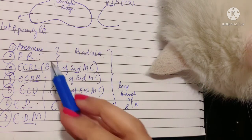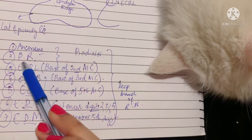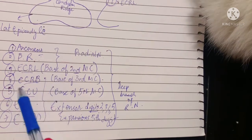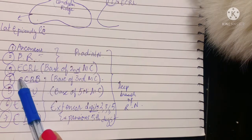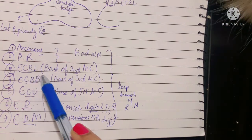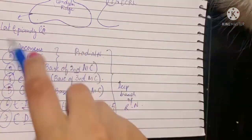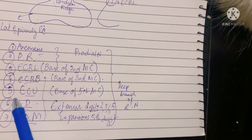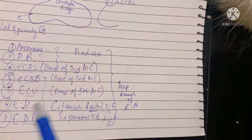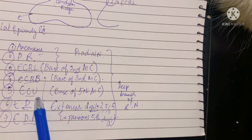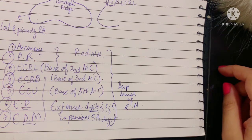Now let's talk about the actions. The anconeus is involved in extending the elbow joint. The brachioradialis is a weak flexor of the elbow joint. The extensor carpi radialis longus and brevis both extend the wrist joint along with abduction, because they attach on the radial side of the hand, causing the hand to move away from the body. The extensor carpi ulnaris causes extension and adduction, moving the hand toward the ulnar border. The extensor digitorum causes extension of the digits, and the extensor digiti minimi extends the little finger. That's all for the superficial muscles — in the next video, we will talk about the deep muscles. Thank you for watching.